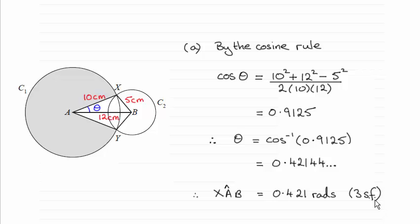The method I've used is the cosine rule. I've copied out the diagram here and we were given the three lengths of the triangle. AX was 10 centimetres, XB was 5 centimetres, and the distance AB was 12 centimetres. So because we knew three sides of the triangle, it was very easy to work out the angle theta by the cosine rule.